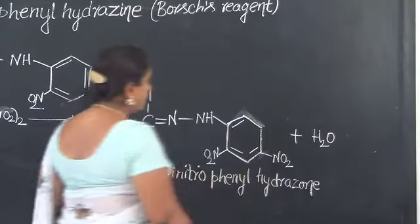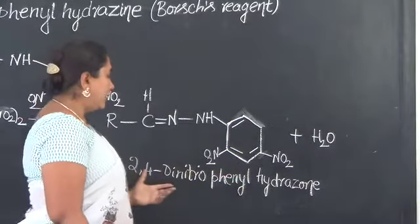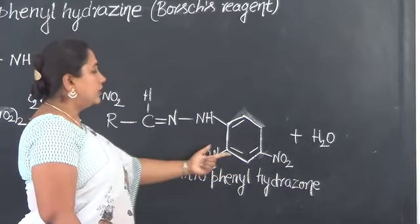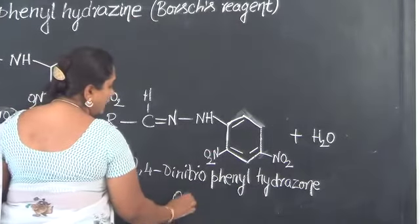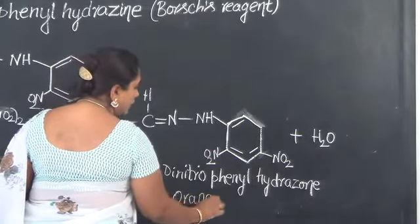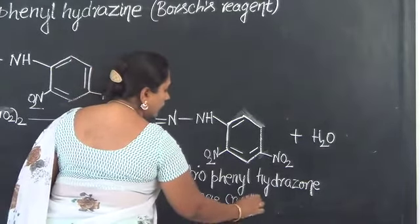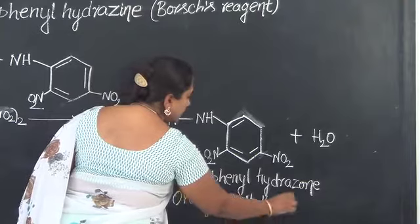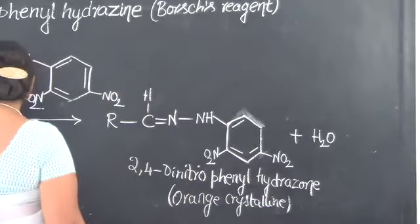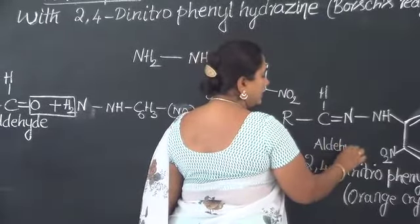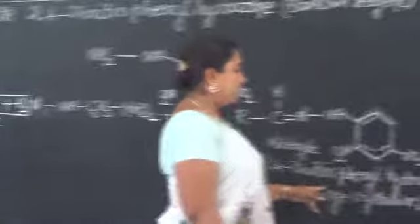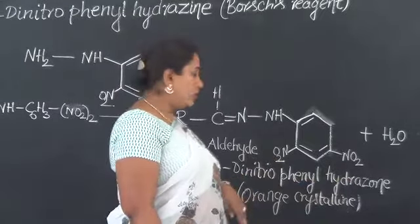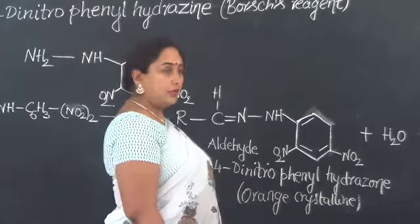This will be whatever the hydrazone that is obtained by the attachment of the benzene ring with the two nitro groups, that is by taking Borsch's reagent. The product formed will always be orange in color and it will be a crystalline compound. It forms an orange crystalline compound. The starting material was aldehyde. The general name can be given as corresponding aldehyde 2,4-dinitrophenylhydrazone, which is an orange crystalline compound.